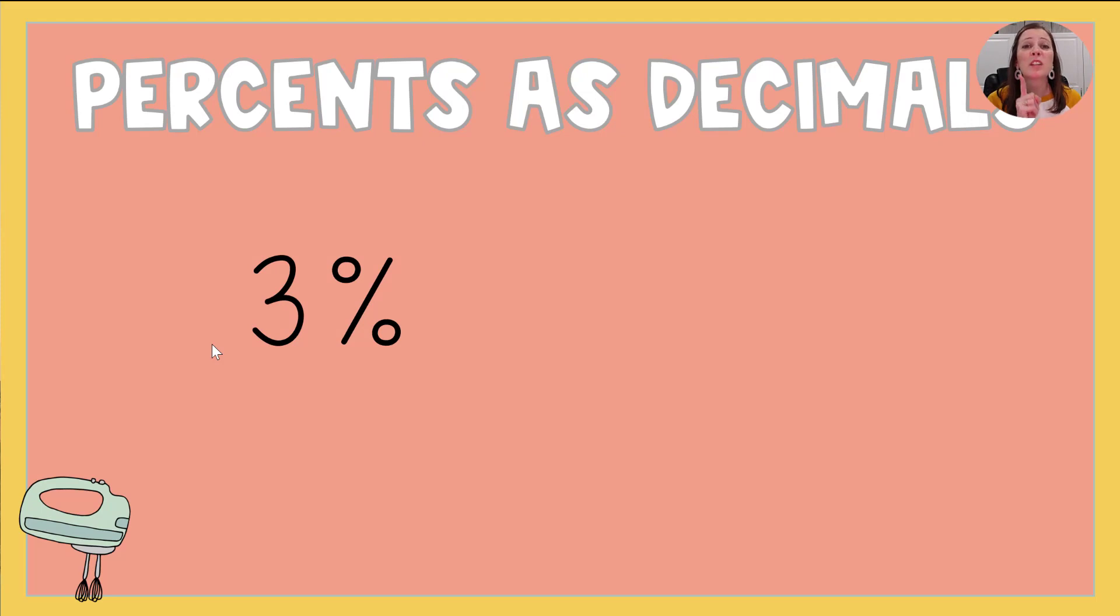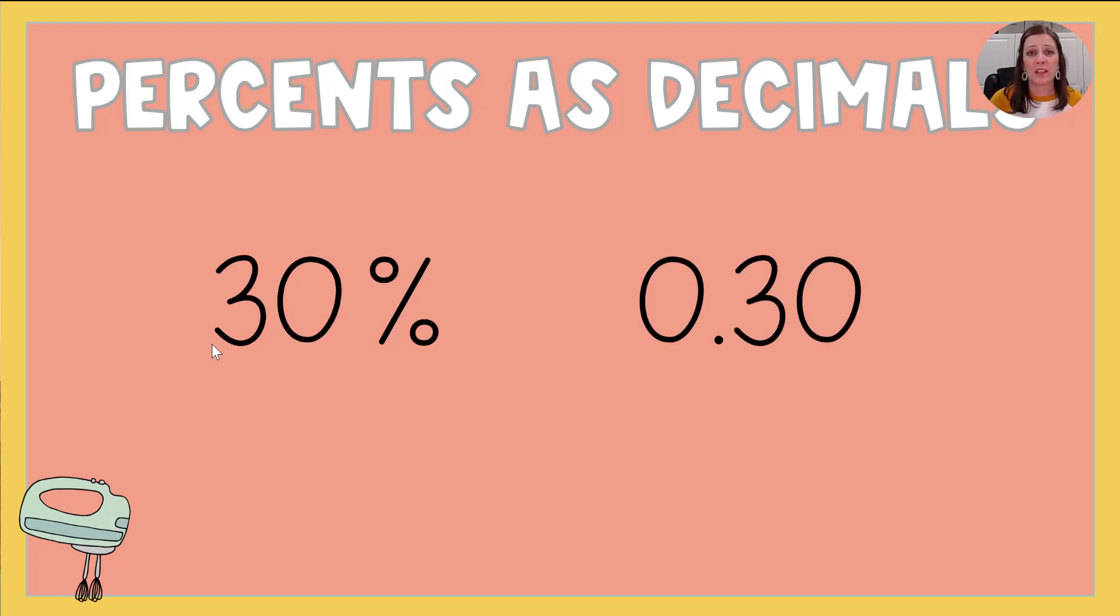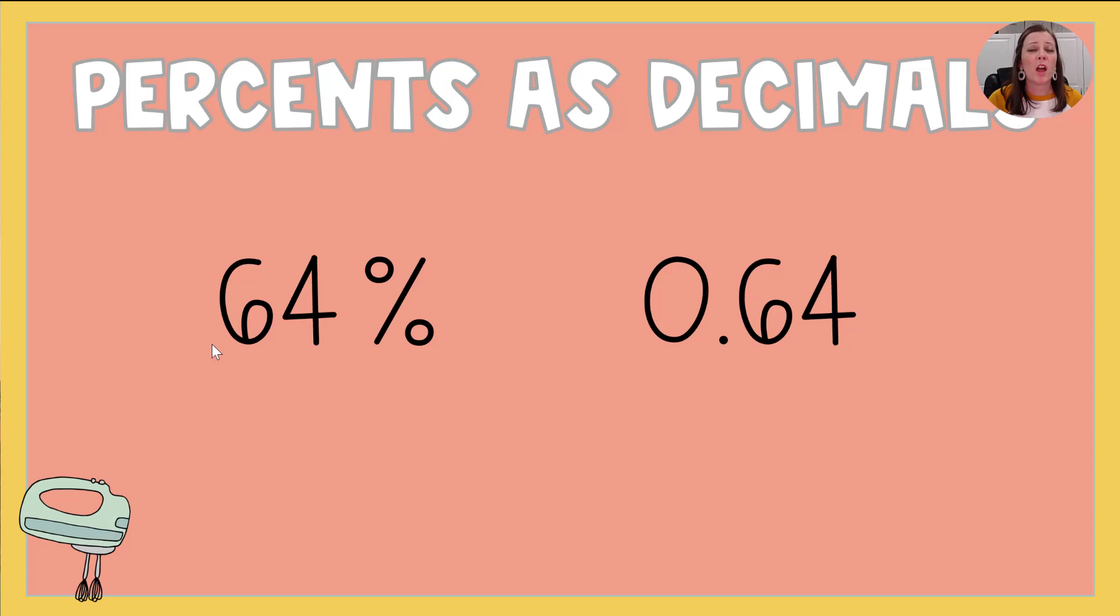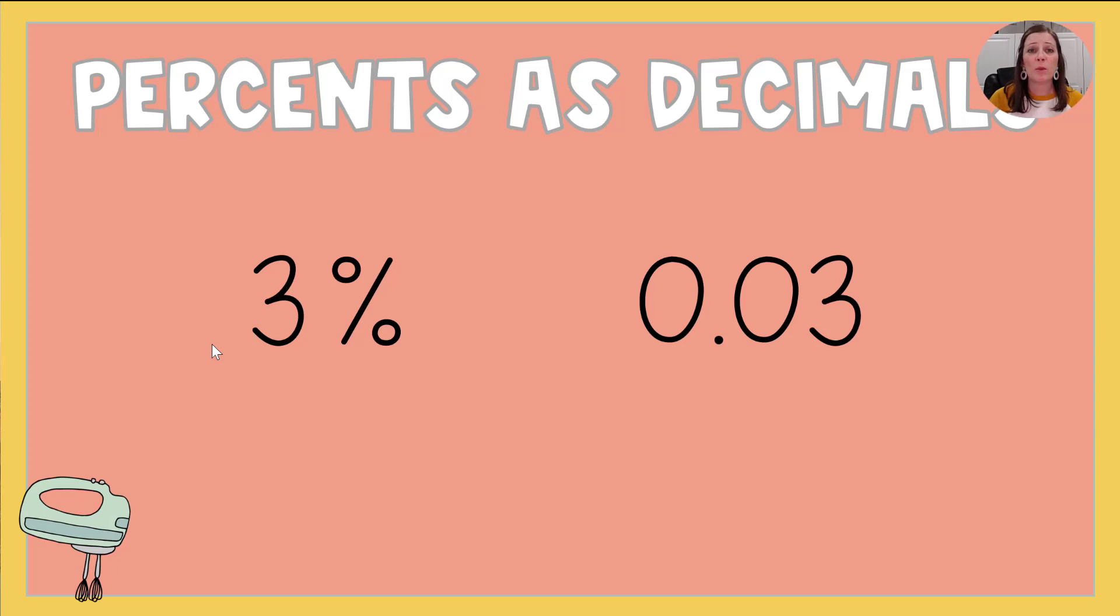All right. So 3%. Now this one is tricky and this is the one that will mess you up. It is not 0.3 because remember 0.3 was 30%. It's 3 out of 100. And we said that with hundreds, we need two places after the decimal. So this one is 0.03. Again, that idea of this imaginary decimal and moving it one, two places. And so you have to fill in that place with a zero. So just be careful when you have a percent that's a single digit like this.